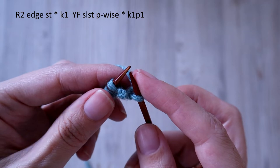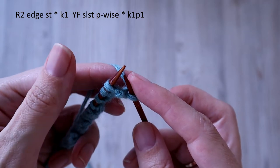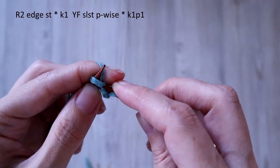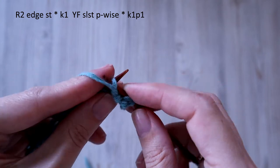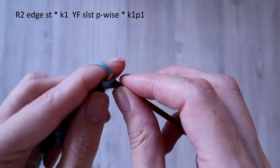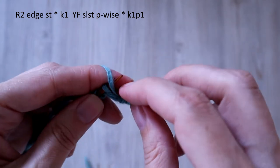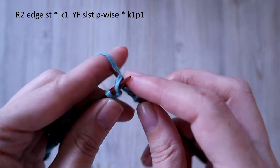Second row. Slip edge stitch and repeat the same. Knit 1, yarn forward, slip stitch purlwise. Knit 1, yarn forward, slip stitch purlwise.